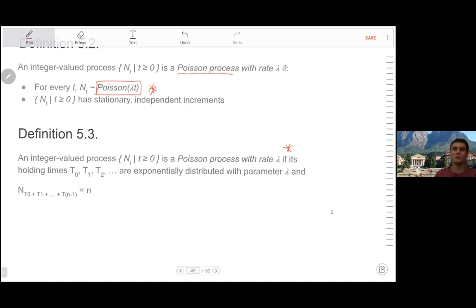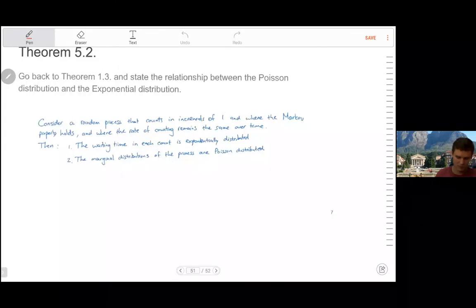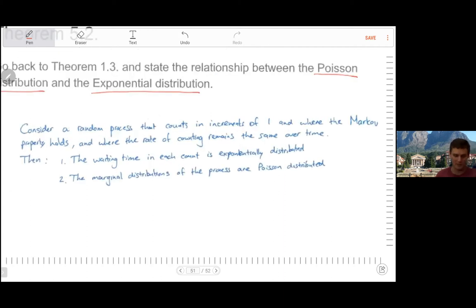It says that if you have independent increments, then you have a Markov process. Go back to theorem 1.3 and state the relationship between the Poisson distribution and the exponential distribution. So this is a question we asked right at the start. And here we now state that relationship explicitly.